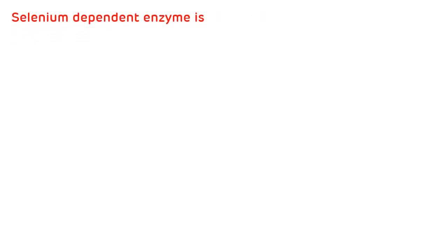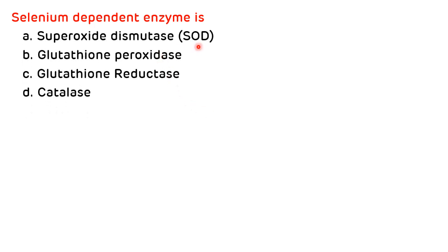Third question: which is a selenium-dependent enzyme — options are superoxide dismutase, glutathione peroxidase, glutathione reductase, and catalase. Superoxide dismutase has two types: mitochondrial, which is manganese dependent, and cytosolic, which is copper-zinc dependent. Glutathione peroxidase is the selenium-dependent enzyme, so the correct answer is B.